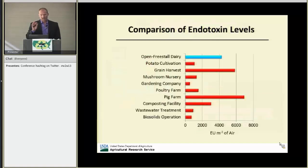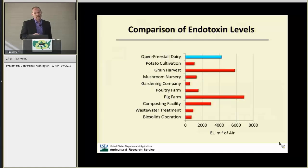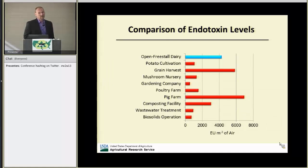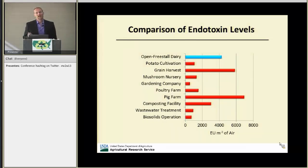To put things in perspective compared to other agricultural environments: the maximum concentration we saw at the freestall dairy was around 4,000 endotoxin units. Comparing that to grain harvest at about 6,000, and pig farms at around 7,000 — this particular dairy falls kind of at the high end of what you'd see in other ag environments, but it's in the ballpark.